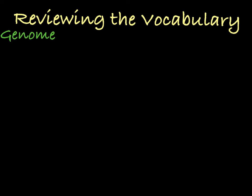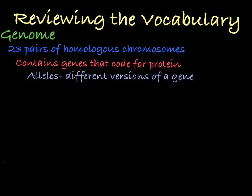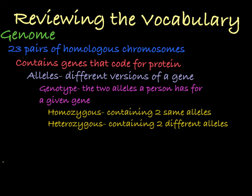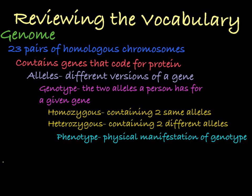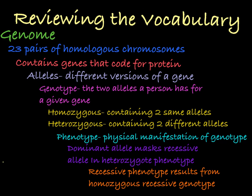To review: a human genome contains 23 pairs of chromosomes. Each pair contains genes found in the same locus. The different versions of the gene are called alleles. Which two versions of the gene a person has is called their genotype. A person with two of the same alleles in their genotype is said to be homozygous, and a person with two different alleles is said to be heterozygous. The physical manifestation of that genotype is called the phenotype. In heterozygotes, one allele may be able to mask another allele in the phenotype. This allele that is shown in the phenotype is the dominant allele, and the allele that is masked is the recessive allele. A recessive phenotype can only be displayed when a person is homozygous for the recessive allele.